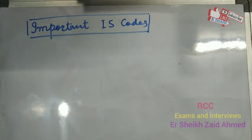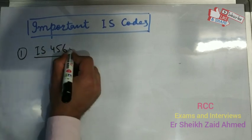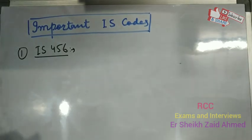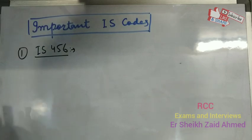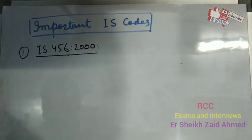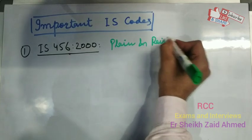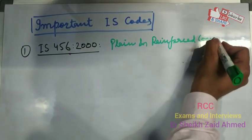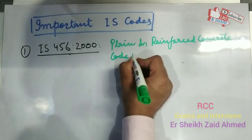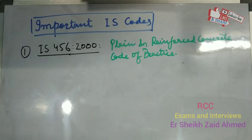First of all, I will be talking about basic Indian standard codes for structural design. The first and most important is IS-456-2000. This code of practice is for plain and reinforced concrete. Wherever the designing of plain and reinforced concrete is concerned, we refer to this code.